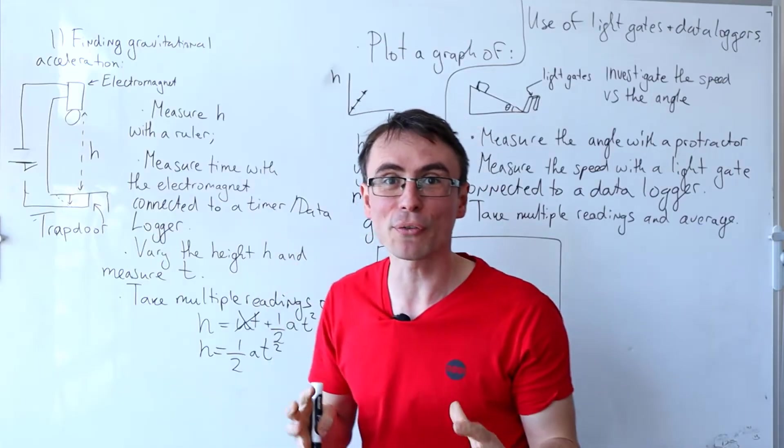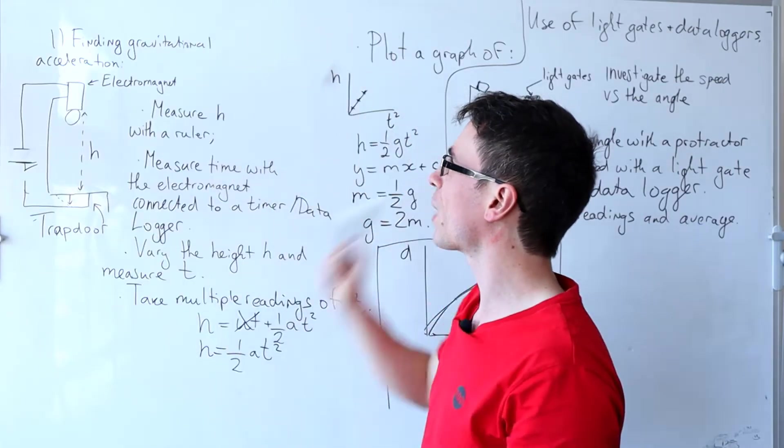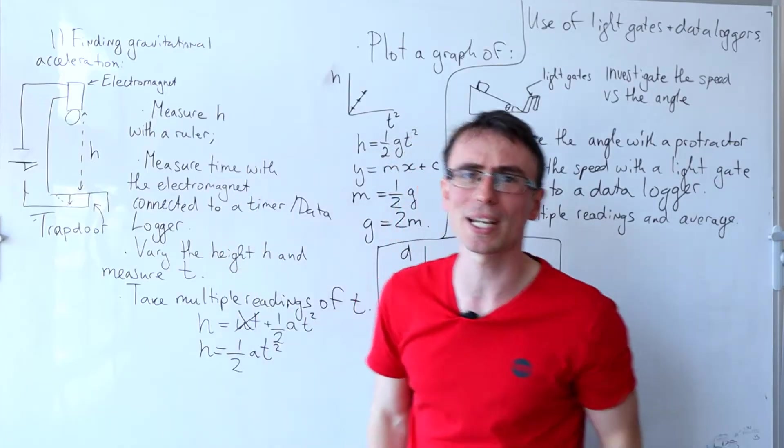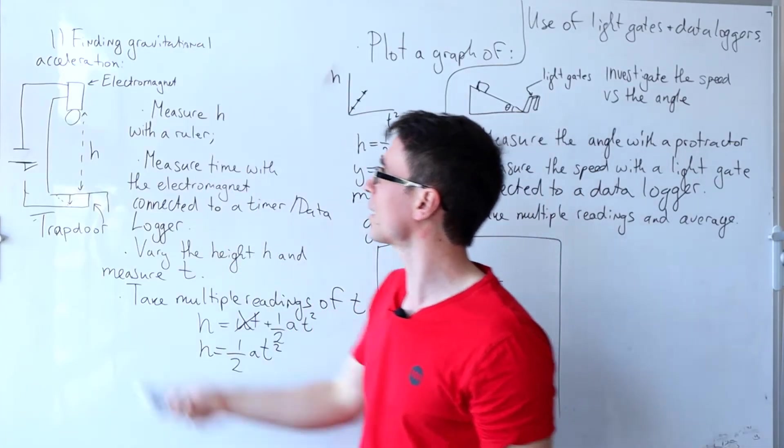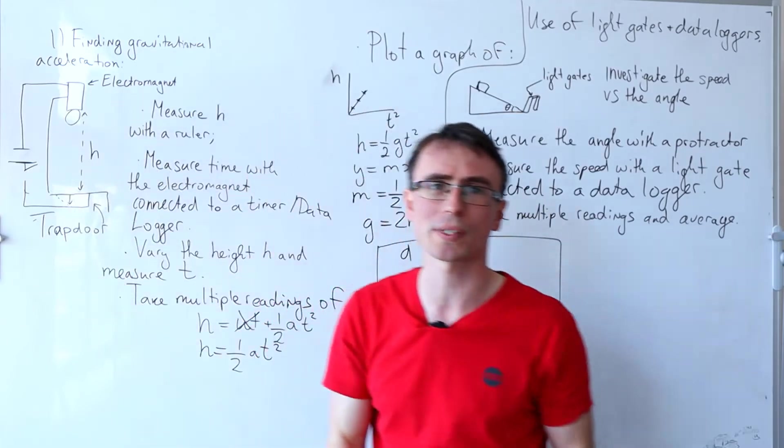So let's have a look at a few really important ones. Number one, finding the gravitational acceleration. This can be done in a number of ways and one of the classic ways is using this electromagnet and trapdoor setup.